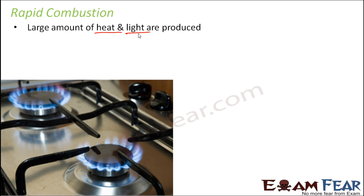The best example to understand rapid combustion is the gas stove. When you switch on the knob of your gas oven and bring a matchstick near it, you do not even need to touch the matchstick to the oven — you just bring it near and it catches fire. The gas stove lights immediately, producing heat enough to prepare your food, and light is also produced.